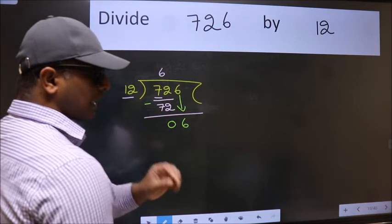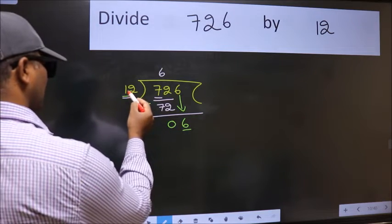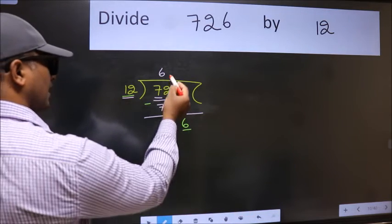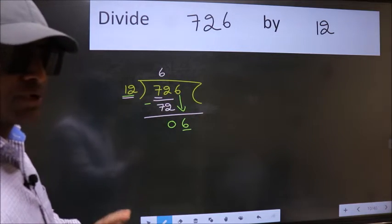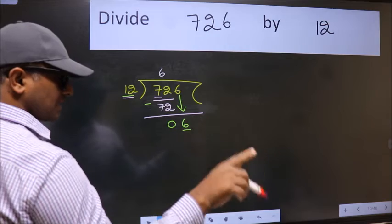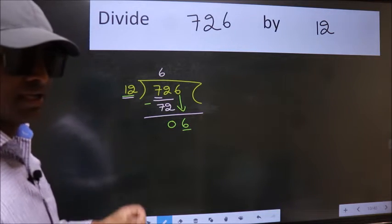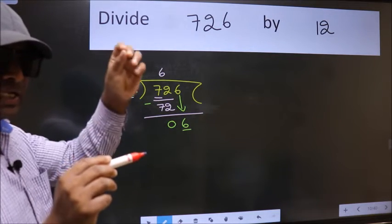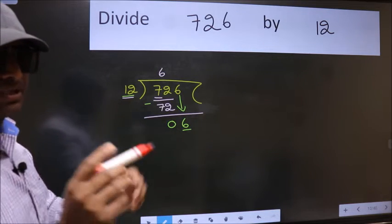After this step, the mistake happens, and the mistake is this. Here we have 6 and here 12. 6 is smaller than 12. So what many do is they directly put a dot and take 0 — which is wrong. You should not bring down the number and also put dot-take-0 in the same step.